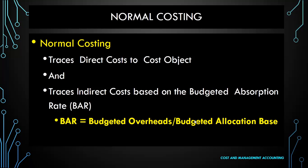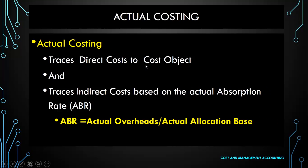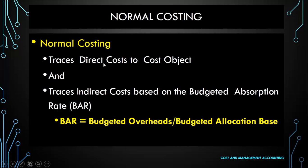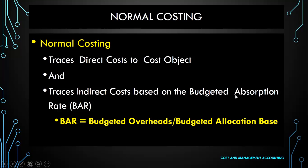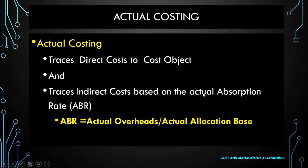Now let us see what normal costing is. In normal costing, direct costs are traced to the cost objects just like in actual costing. However, the indirect costs are traced based on the budgeted absorption rate. So the key difference between normal costing and actual costing is the use of the budgeted absorption rate versus the actual absorption rate.